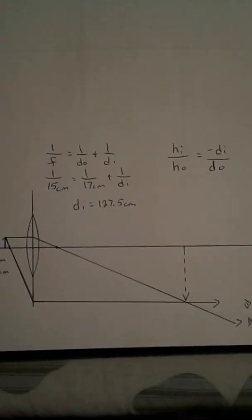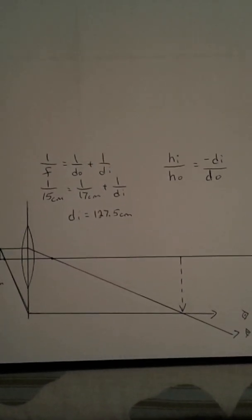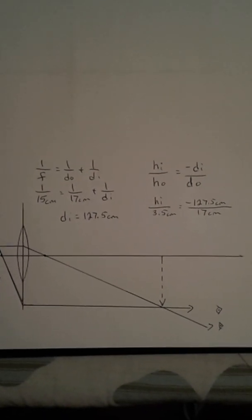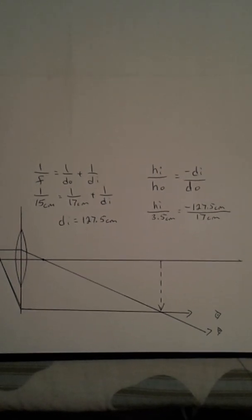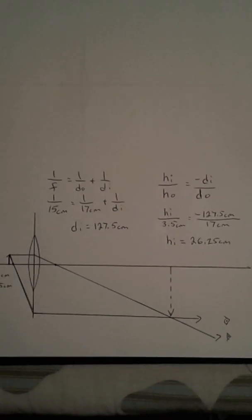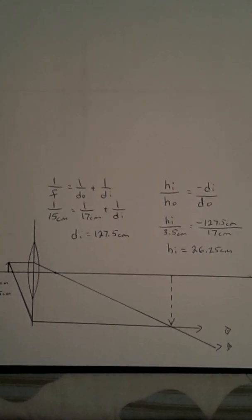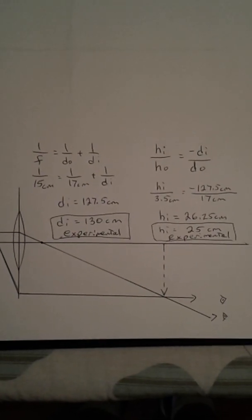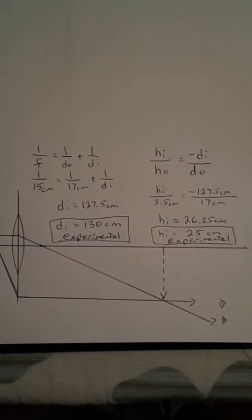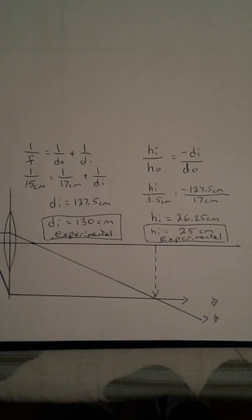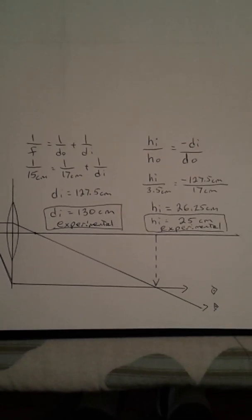We'll check out the height of the image now too. And I get about 25 centimeters. We'll use the height formula. It's the same height of the arrow originally as it was on the last problem. Three and a half centimeters. And we get 26.25 centimeters. And that would be theoretical. And that compares really well to a distance to the image of 130 experimental and a height of the image of 25 experimental. And this seems to agree with the formula.